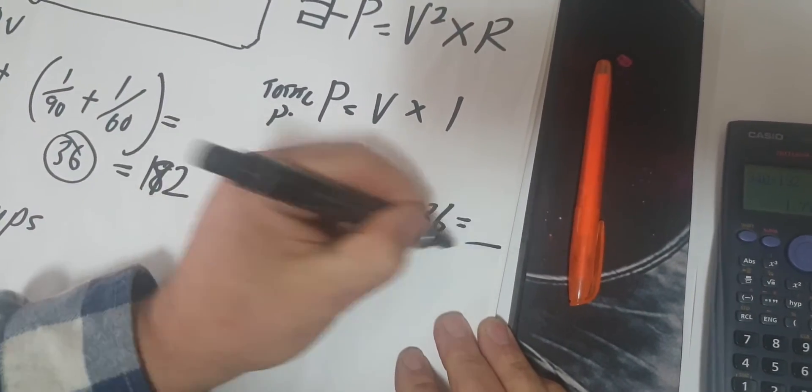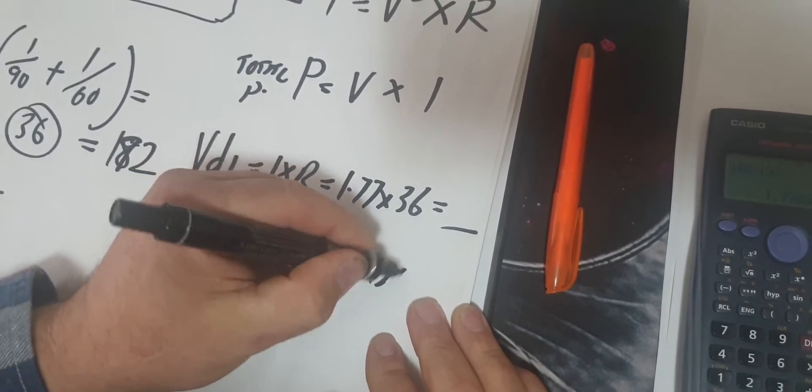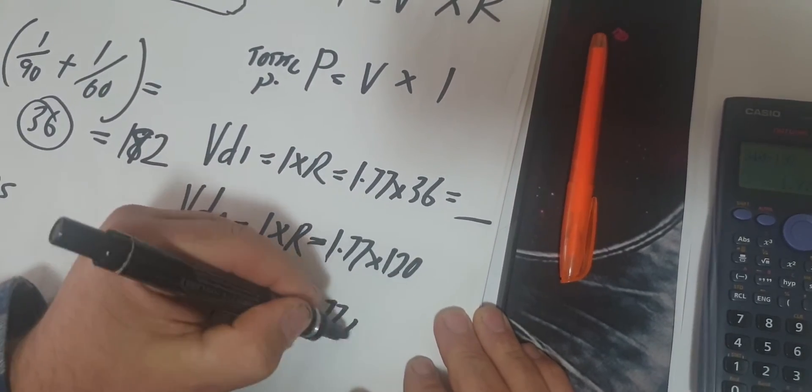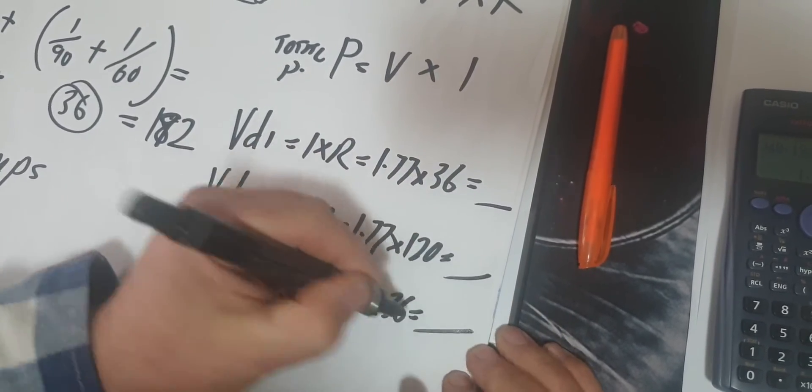Then I've got 1.77 times 120, and 1.77 times 36 again. So let's get our voltage drop for these three.